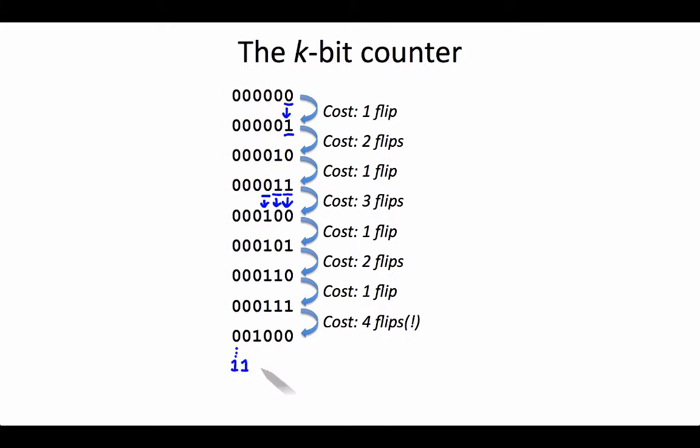Eventually, I'm going to reach the point where all of my bits are 1, and when I increment that, assuming I'm following modular arithmetic, I'll flip every bit back to 0 for a worst-case cost of k flips. In terms of big O notation, we would say that our worst-case cost is in big O of k.